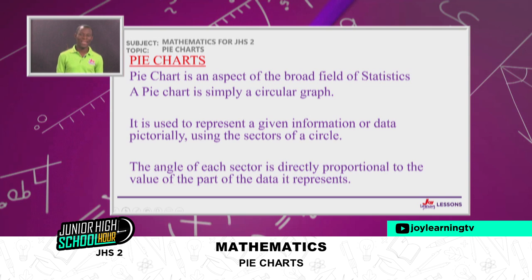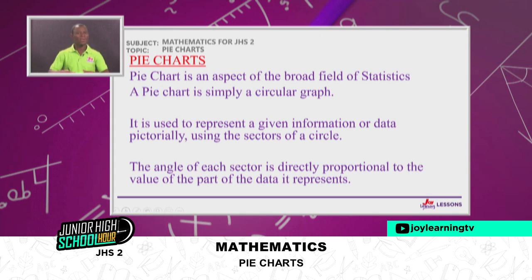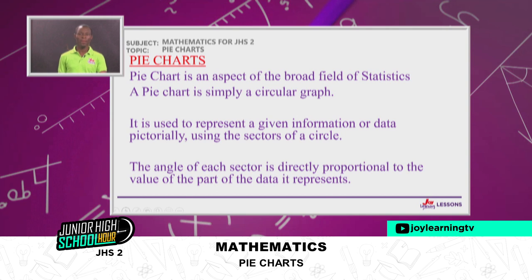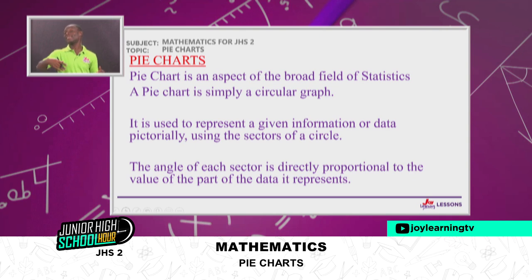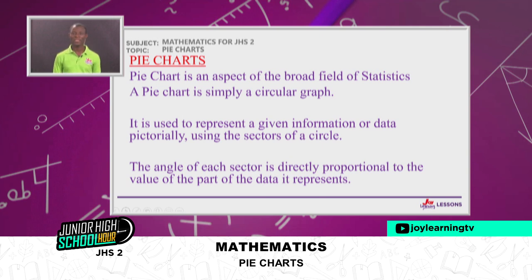What is a pie chart? It is an aspect of the broad field of statistics, and it is simply called a circular graph because it is done on or within a circle. It is used to represent given data or information pictorially — we present the information by way of a picture — and we use the sectors of a circle to present that data. Those sectors give a fair idea of the information that was analyzed and presented in the pie chart.